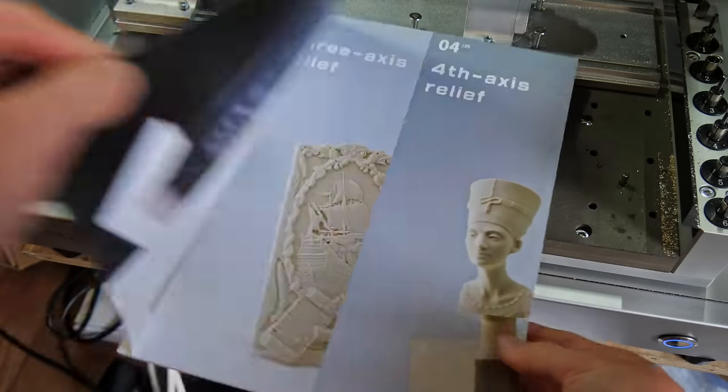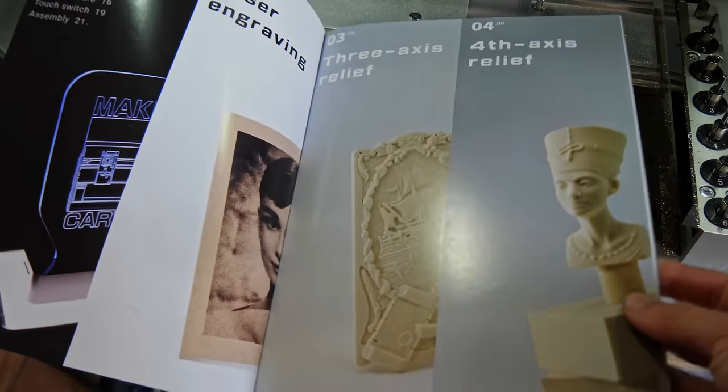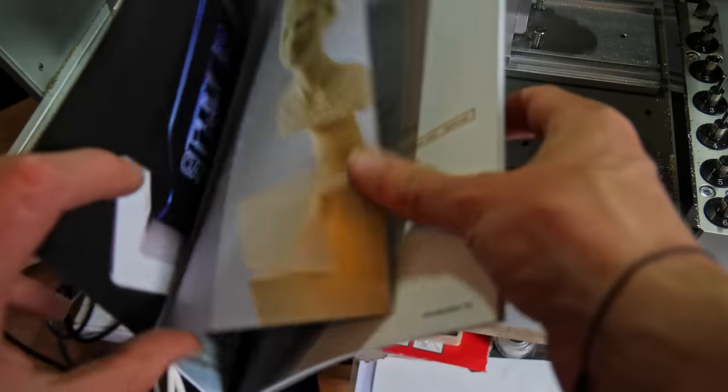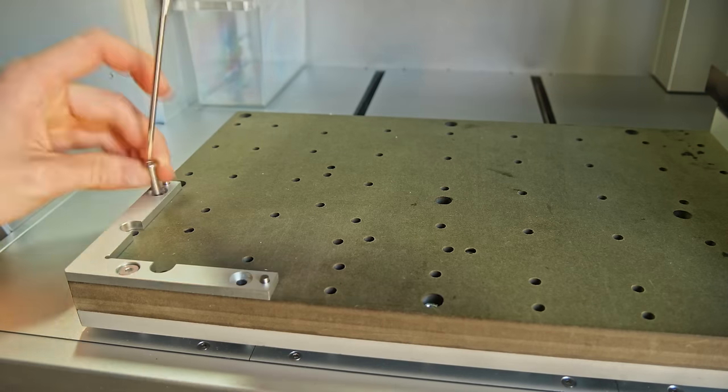The machine comes with some materials and some pre-loaded example g-code. I used these initially just to get used to the software and the setup of the machine.